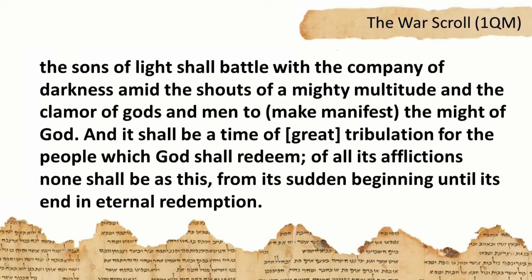'The sons of light shall battle with the company of darkness amid the shouts of a mighty multitude and the clamor of gods and men to make manifest the might of God. And it shall be a time of great tribulation for the people, which God shall redeem of all its afflictions. None shall be as this, from its sudden beginning until its end in eternal redemption.' This language is taken directly from Daniel chapters 11 and 12 — a time of tribulation like never before, ending in redemption for the people of God and destruction for the enemies of God. The War Scroll can be seen as an exposition of Daniel chapters 11 and 12.